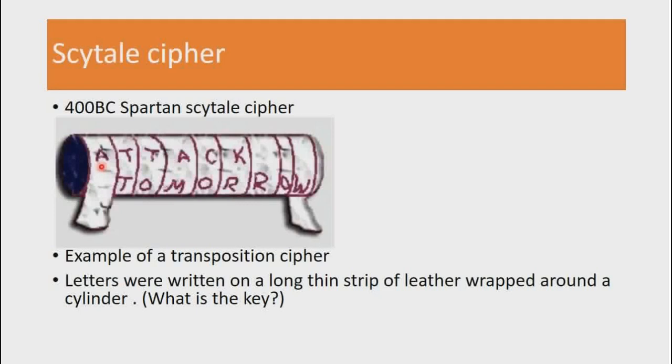Now with the Scytale cipher, our encryption key is the circumference of the cylinder. This means that the recipient would have to wrap the piece of paper around a cylinder of similar circumference for them to be able to generate the original plaintext.